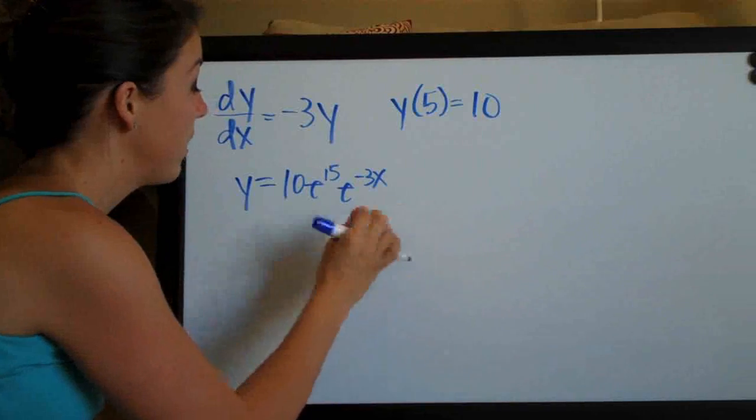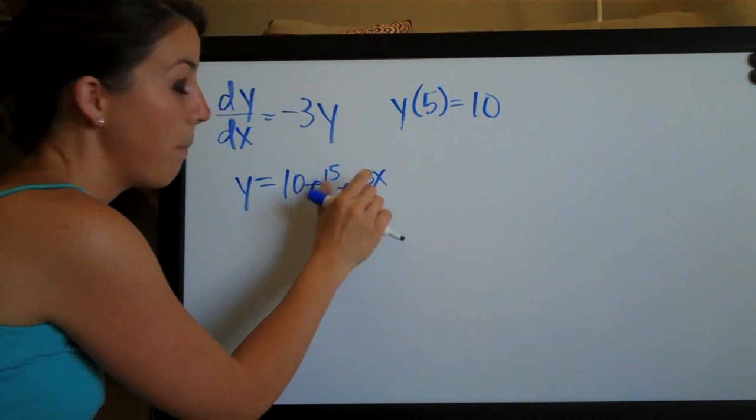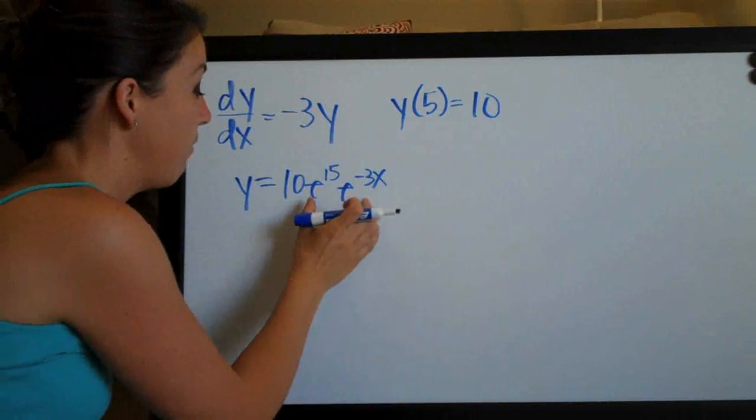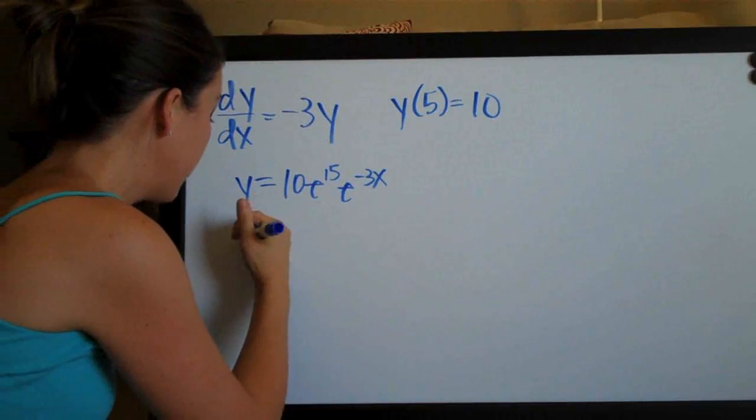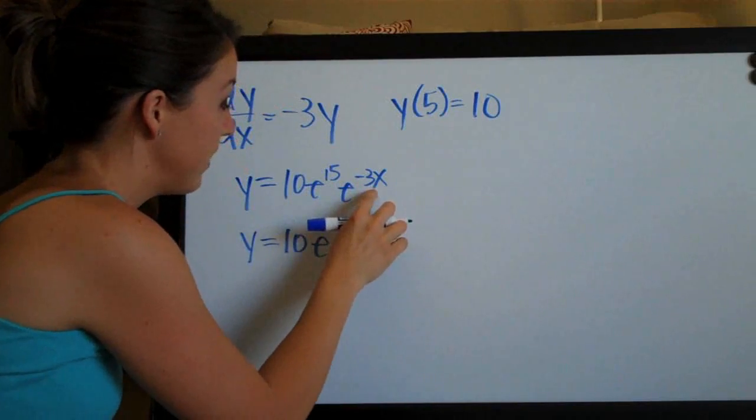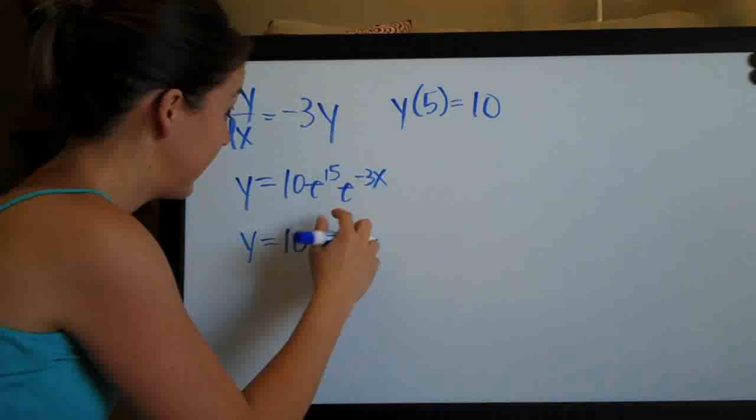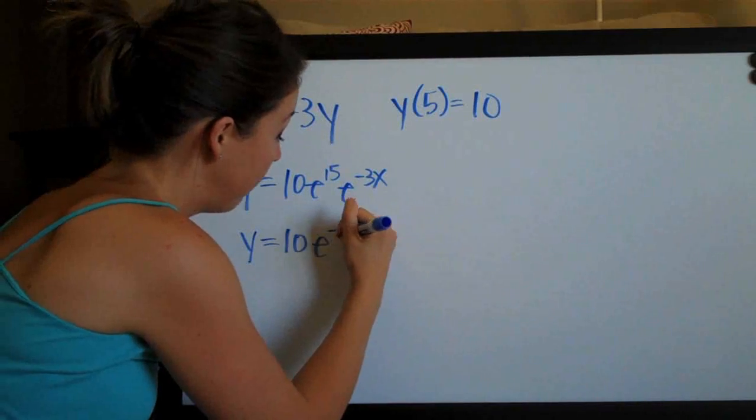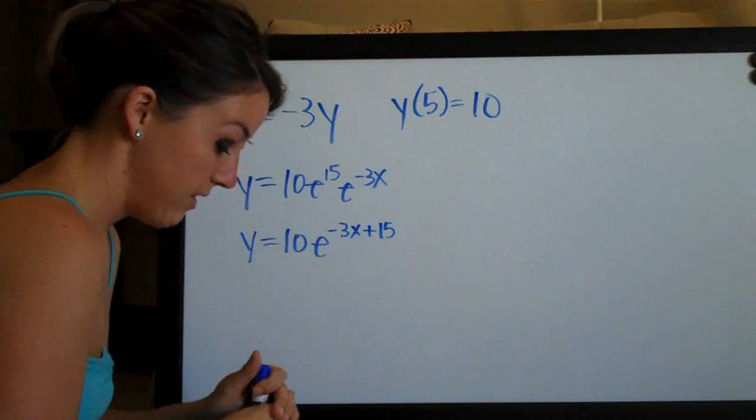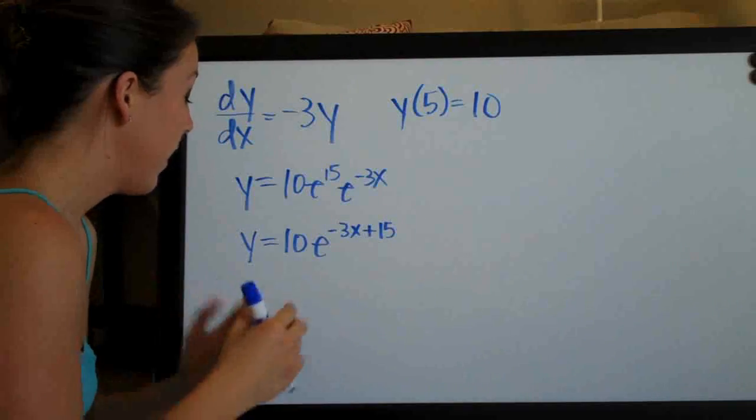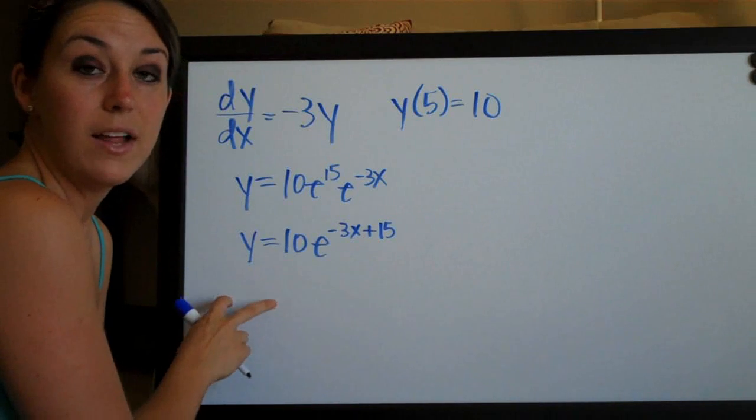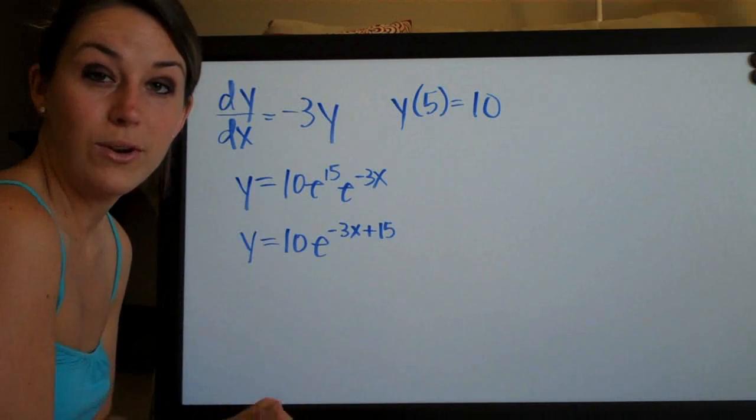So remember that rule before where we broke apart the two different terms that were in the exponent on the e and multiplied them together? Well we can just reverse that and we'll get y equals 10 e and then we can combine these exponents since these two e's are multiplied together. And we'll get 10 e to the negative 3x plus 15 and that will actually be our final answer. And because we were able to solve for y and only have this y on the left side, this is an explicit solution as opposed to an implicit solution.